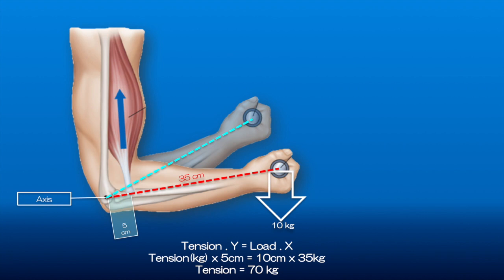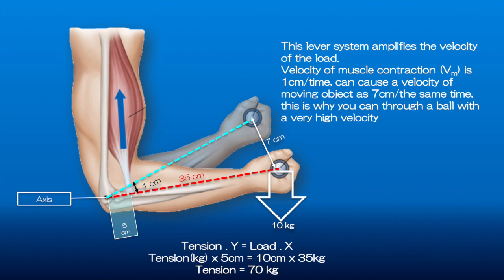So if we move, for example, about one centimeter, we can see that the load will be moved around seven centimeters in this example. And if we think about the velocity, the muscle moves one centimeter in one second, so the object moves seven centimeters in one second, which is seven times higher. This is the reason we can have these sports, for example throwing a softball, where the velocity can reach a speed of up to 160 kilometers per hour.